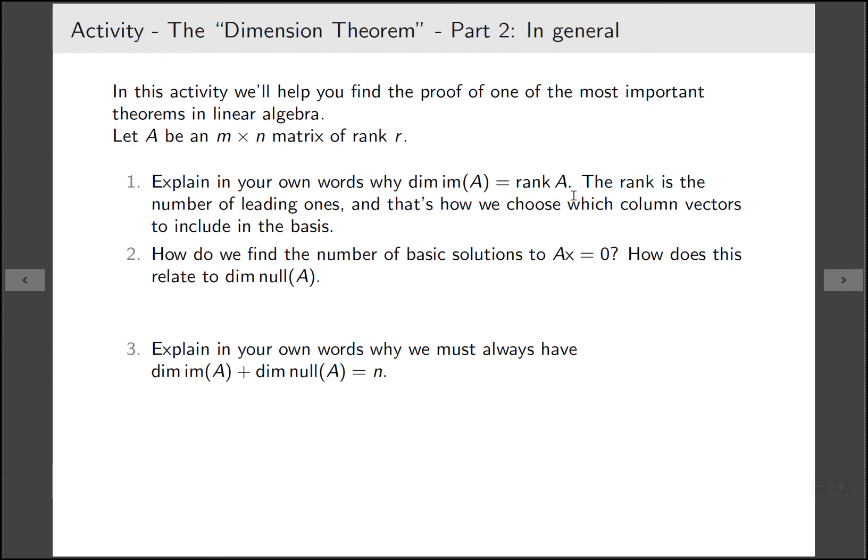Well let's look at how we computed each of them. The rank of A is the number of leading ones. The dimension of the image of A, well how did we choose things to be in the basis of the image of A?